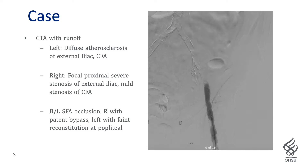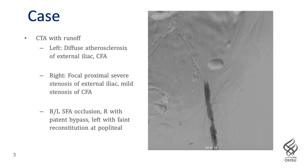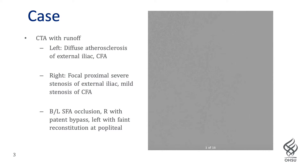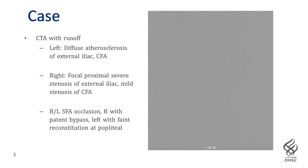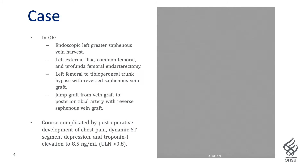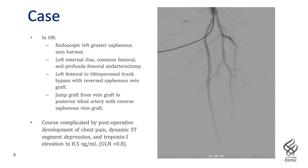The initial workup included a CTA with distal runoff demonstrating diffuse atherosclerotic disease in bilateral iliac systems, more distally bilateral SFA occlusions with patent bypass graft on the right, and reconstruction of the popliteal on the left. She was taken to the operating room where she underwent left external iliac, common femoral, and profunda endarterectomy. Her saphenous vein was harvested for a bypass to the PT distally.